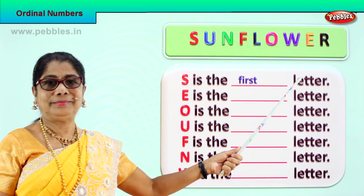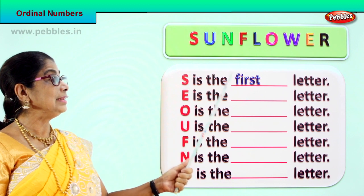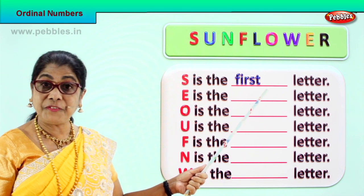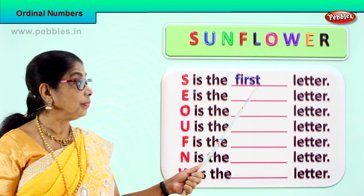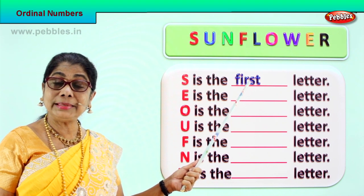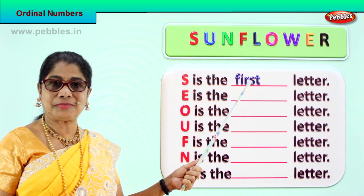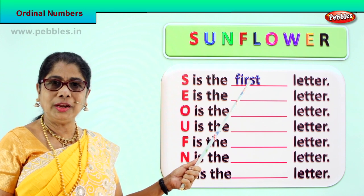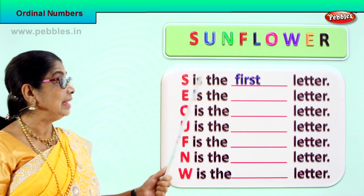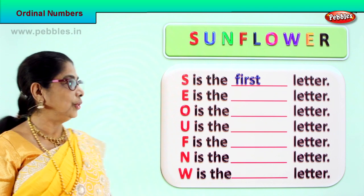The letter S is the first letter of sunflower. Spell first: F-I-R-S-T. First. What is the ordinal position of letter S? It is the first letter. Good.